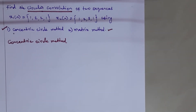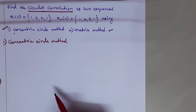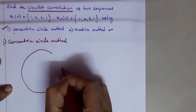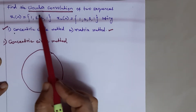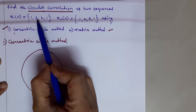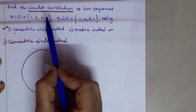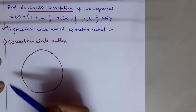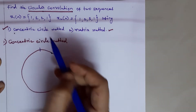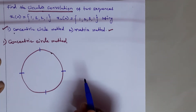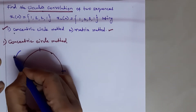In the concentric circle method, we have to draw two circles — one outer circle and one inner circle. In the outer circle, we mark the X1(n) sequence values. X1(n) has four samples: 1, 2, 2, 1. We place these samples on the circle at equal distances in a counter-clockwise (anti-clockwise) direction. Since there are four samples, we divide the circle into four equal positions.